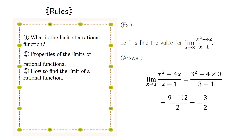Next, let's try to find the limit of a rational function. In the example shown, since the rational function x squared minus 4x over x minus 1 is defined when x equals 3, we can use the properties of limits of rational functions. x approaches 3, so if we substitute 3 for x, we know the limit of the rational function x squared minus 4x over x minus 1 is negative 3 over 2.